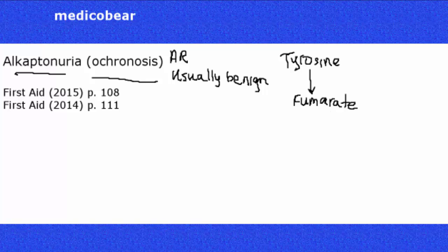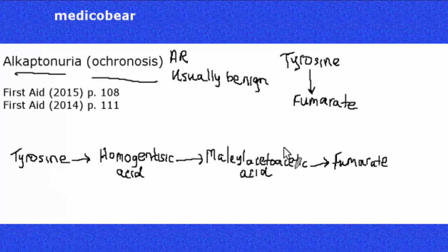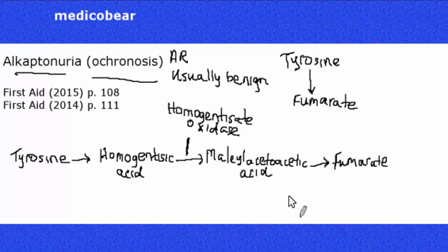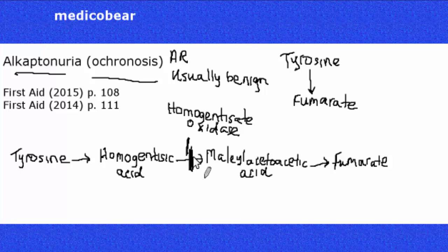Just for review, tyrosine is being converted to fumarate. What's important for the student to know is that alcaptonuria has to do with a deficiency in homogentisate oxidase — that's high yield. There's a problem converting homogentisic acid further along the pathway, so this pathway is blocked.